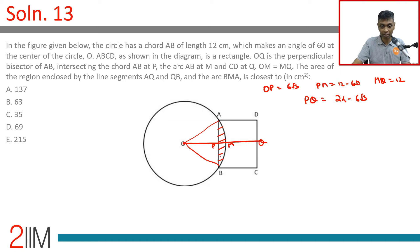This is nothing but sector minus triangle. Sector: the central angle is 60 degrees, so it is one sixth of area of circle. Sector is 1 by 6 into pi into 12 square minus triangle. Triangle is root 3 by 4 a square because it's an equilateral triangle: root 3 by 4 into 12 square.